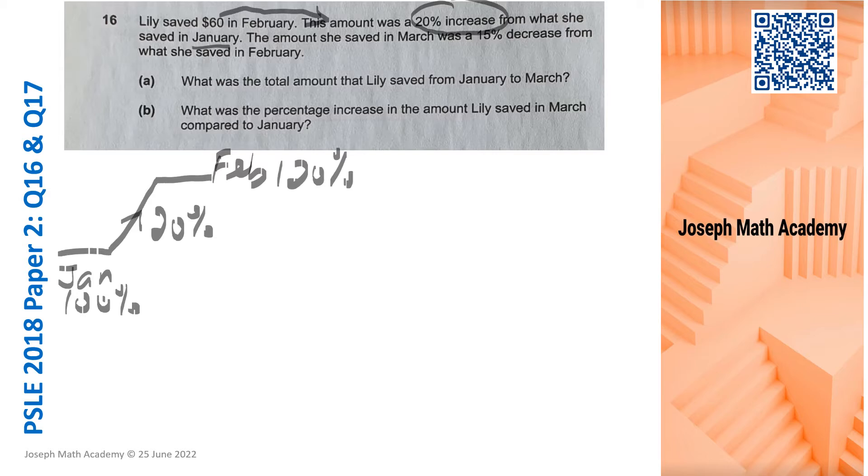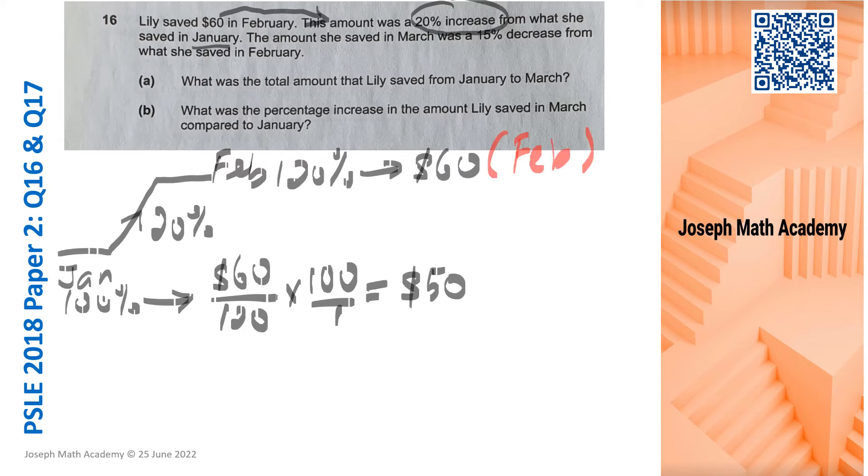Now, $60 is back to February. So this is our $60, meaning we can find our 100% of the one that Lily saved in January. So that will be 60 divided by 120 times 100. That gives us $50. So let's annotate a little further. This is the information that we have.